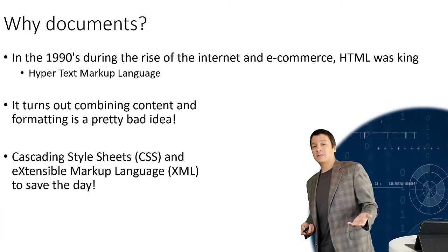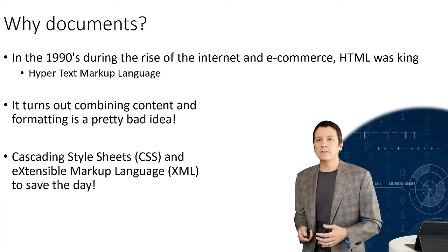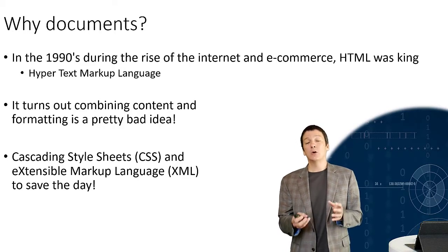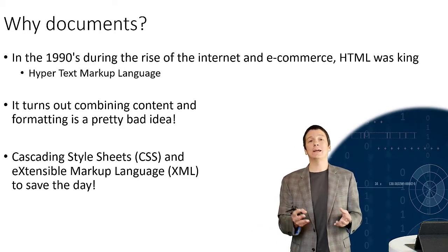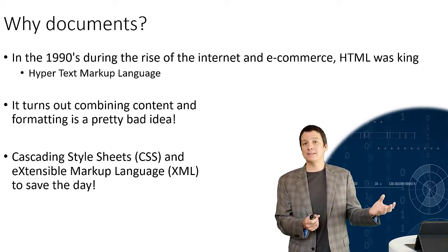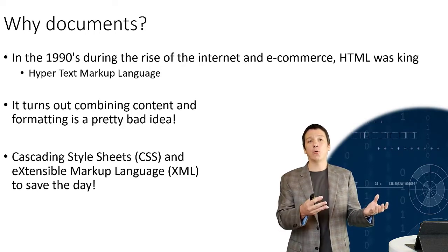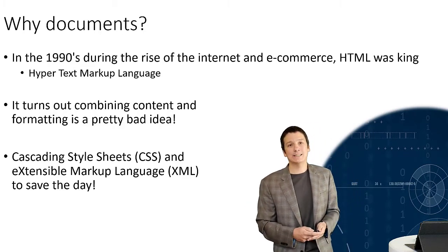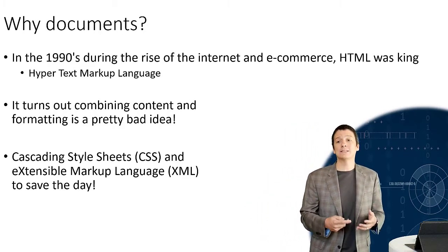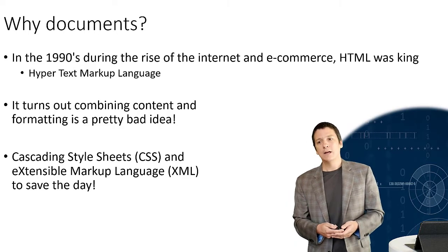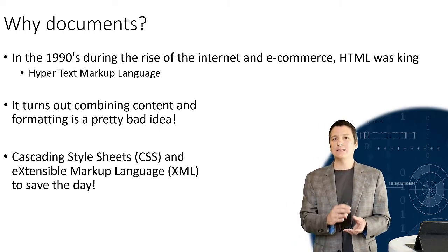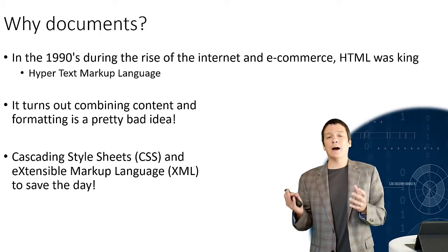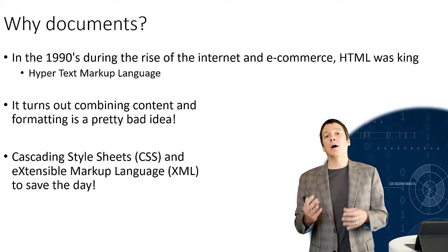When all your content and formatting are mixed together in one HTML file, it becomes quite difficult to reuse that content. So in the late 90s and early 2000s we saw the advent of cascading style sheets, used in conjunction with HTML, where the CSS dictated the formatting and the actual content was captured in an XML, or Extensible Markup Language, file. This combination of CSS, XML, and HTML made web content much more flexible and usable.